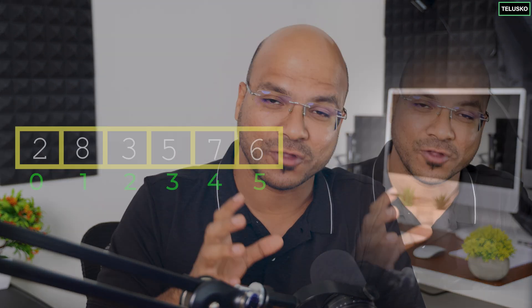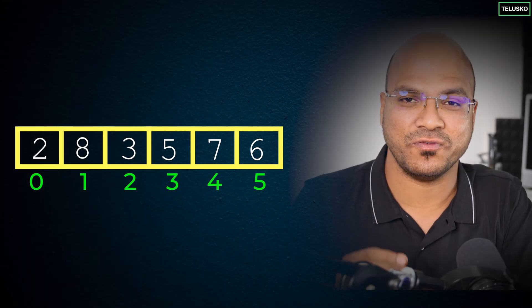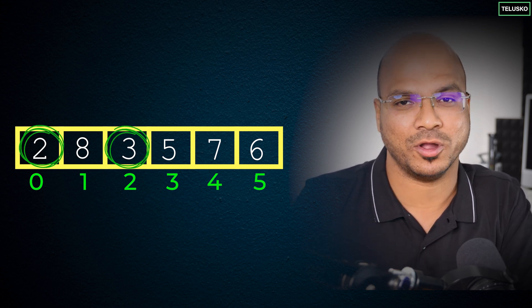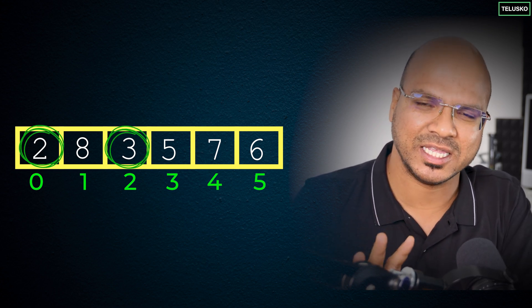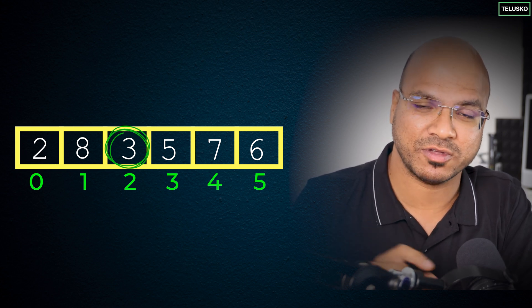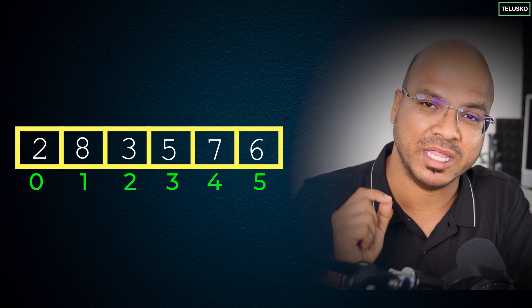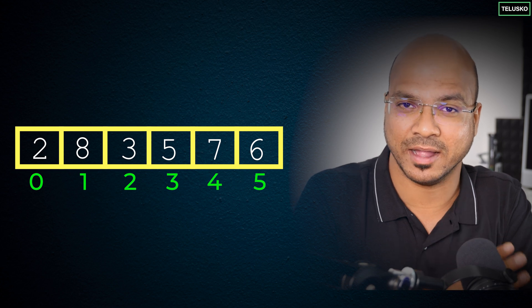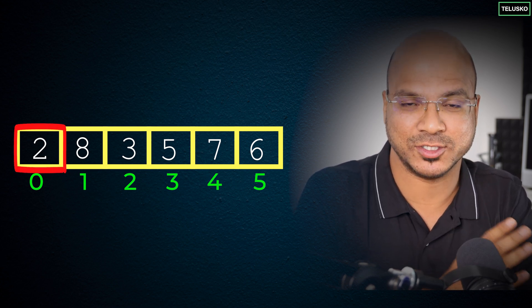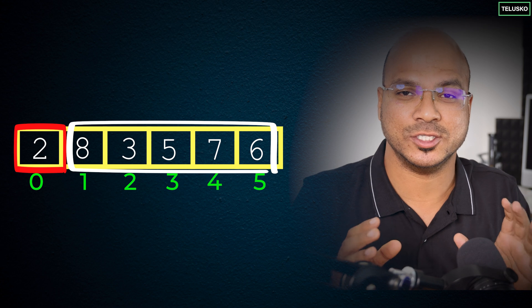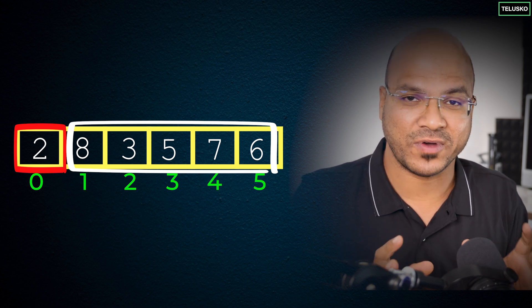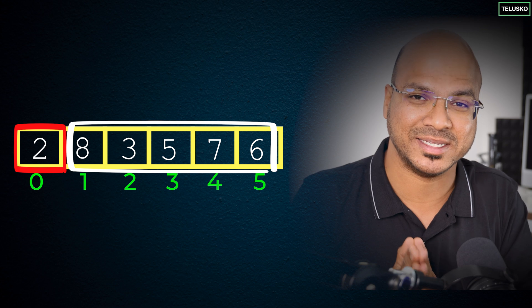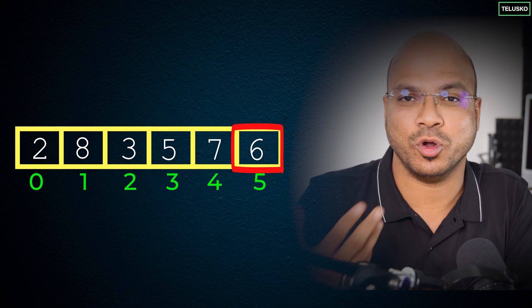In selection sort, we don't swap every time we compare two values. Instead, from the entire array you find the minimum or maximum value, depending on how you want to implement it. Let's say we go for the minimum value — you find it from the entire array and make sure it stays at the start. Once that's done, that becomes your sorted part. You create two sections: the sorted section and the unsorted section.